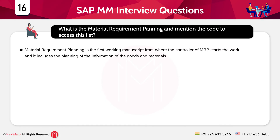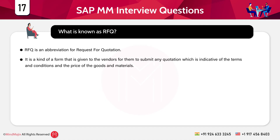The next question is: what is Material Requirement Planning and what is the code to access the MRP list? MRP is the first working document from where the MRP controller starts work, and it includes planning information for goods and materials. To access a single item MRP list, one can use the code MD05.